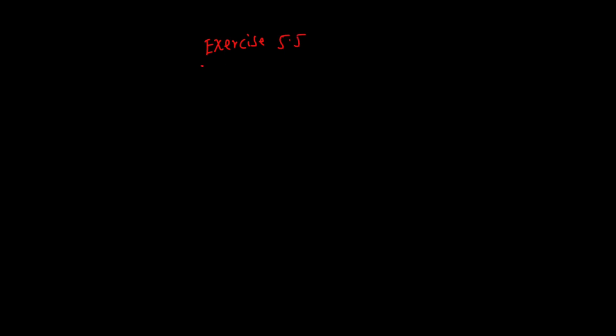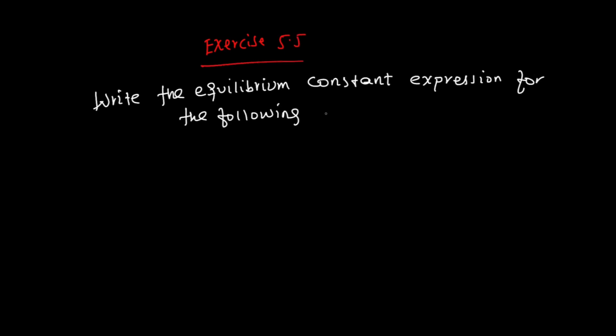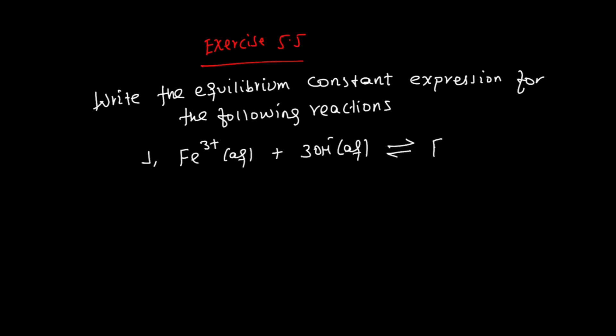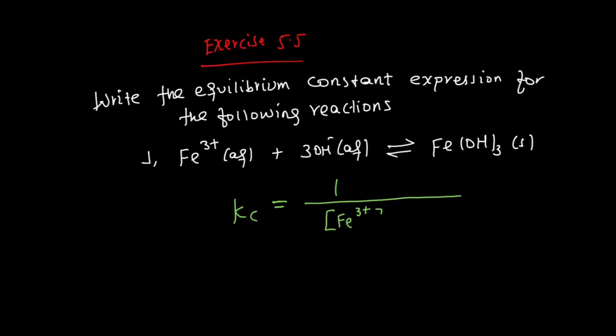Exercise 5.5: Write the equilibrium constant expression for the following reaction. Iron ion (aq) and hydroxide ion (aq) react to form iron hydroxide (s). Since iron ion and hydroxide ion are in aqueous solution and iron hydroxide is a solid, the solid is excluded from the expression. Therefore, Kc equals the concentration of iron ion times the concentration of hydroxide ion.